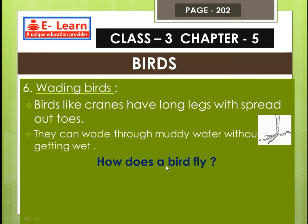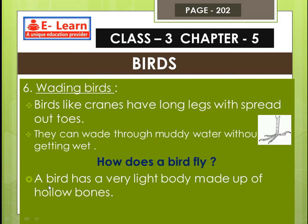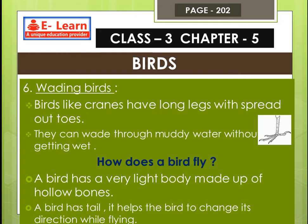How does a bird fly? A bird has a very light body made up of hollow bones. Because their bones are hollow, their weight is light. A bird also has a tail which helps it to change direction while flying.